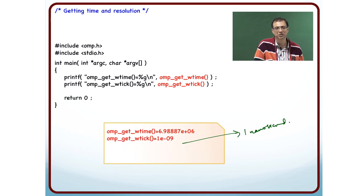Because you make a call to the timer, you execute the code, you make another call to the timer, and then you calculate the difference. That tells you how long it took to execute that piece of code.